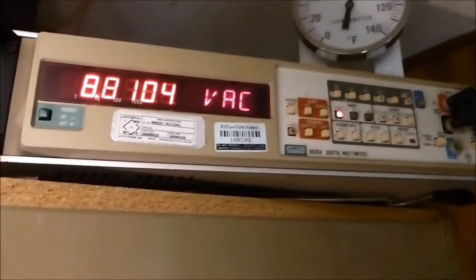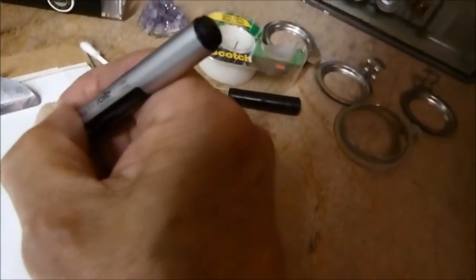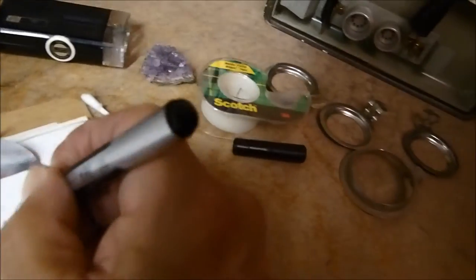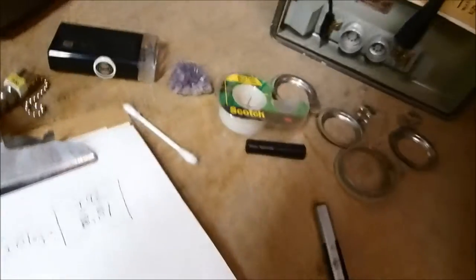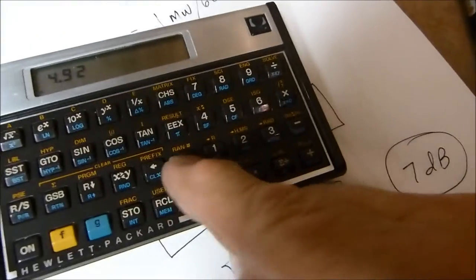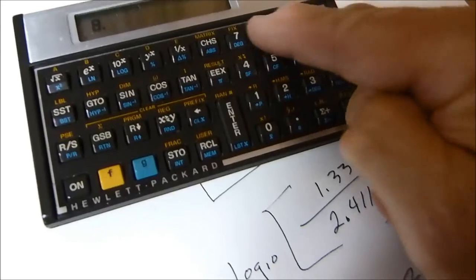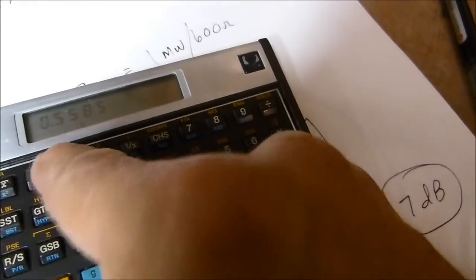Now let's do it just for voltage. Our voltage is 8.81 volts. We decrease it about 5 dB — right back where we were — and our new voltage is 4.92. So we go 20 times log base 10 of those two numbers because it's voltage: 4.92 divided by 8.81, log, times 20 — and there's our 5 dB again. Everything's working. It's a little bit of math but it's not overwhelming, and it actually works.